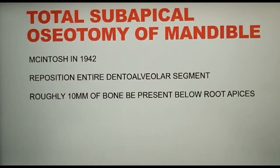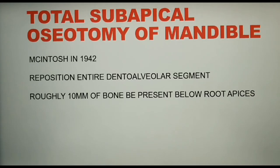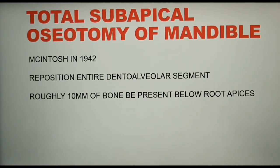Let's now move on to total subapical osteotomy of the mandible. It was first described by McIntosh in the year 1942 and is used to reposition the entire dentoalveolar segment. At least 10mm of bone must be present below the apices of the teeth before performing the osteotomy cut.